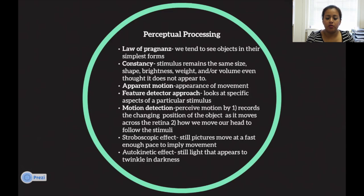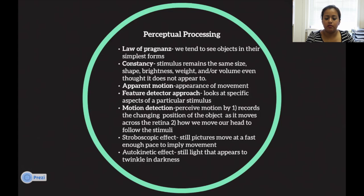Apparent motion is the appearance of movement. The feature detector approach looks at specific aspects of a particular stimulus. Motion detection — perceived motion occurs by: one, records of changing positions of objects as they move across the retina; and two, moving our head to follow the stimulus. The stroboscopic effect is when pictures move fast enough in space to imply movement. The autokinetic effect is when a still light appears to move in darkness.